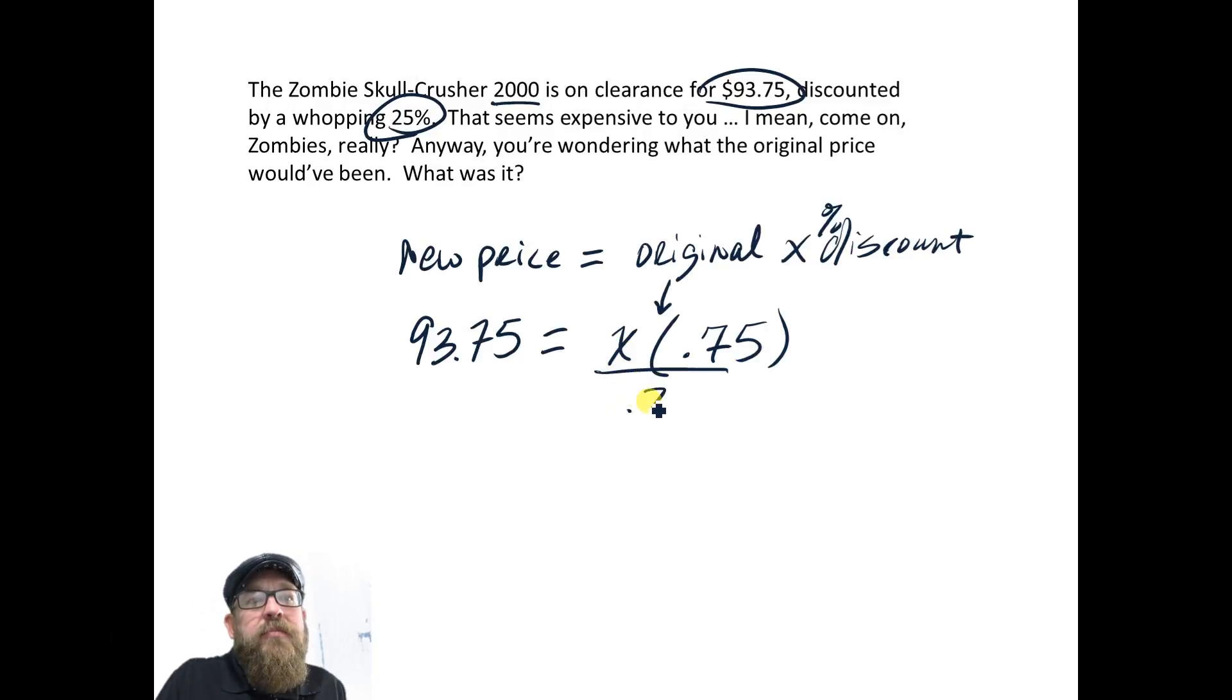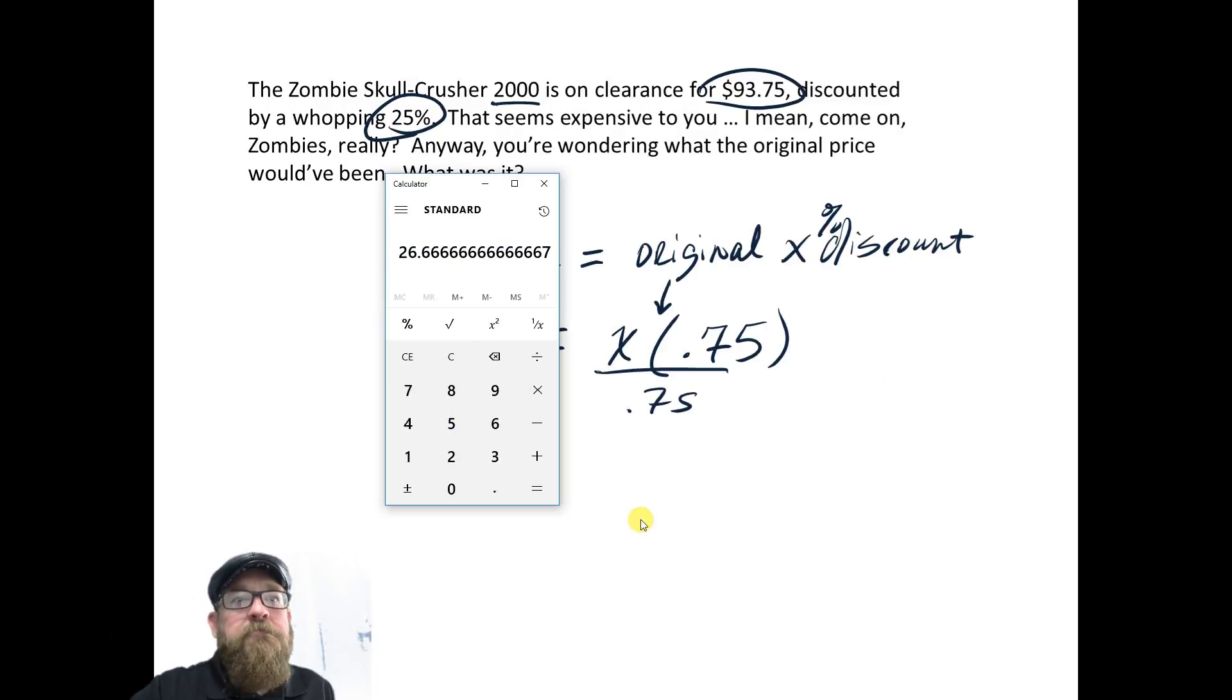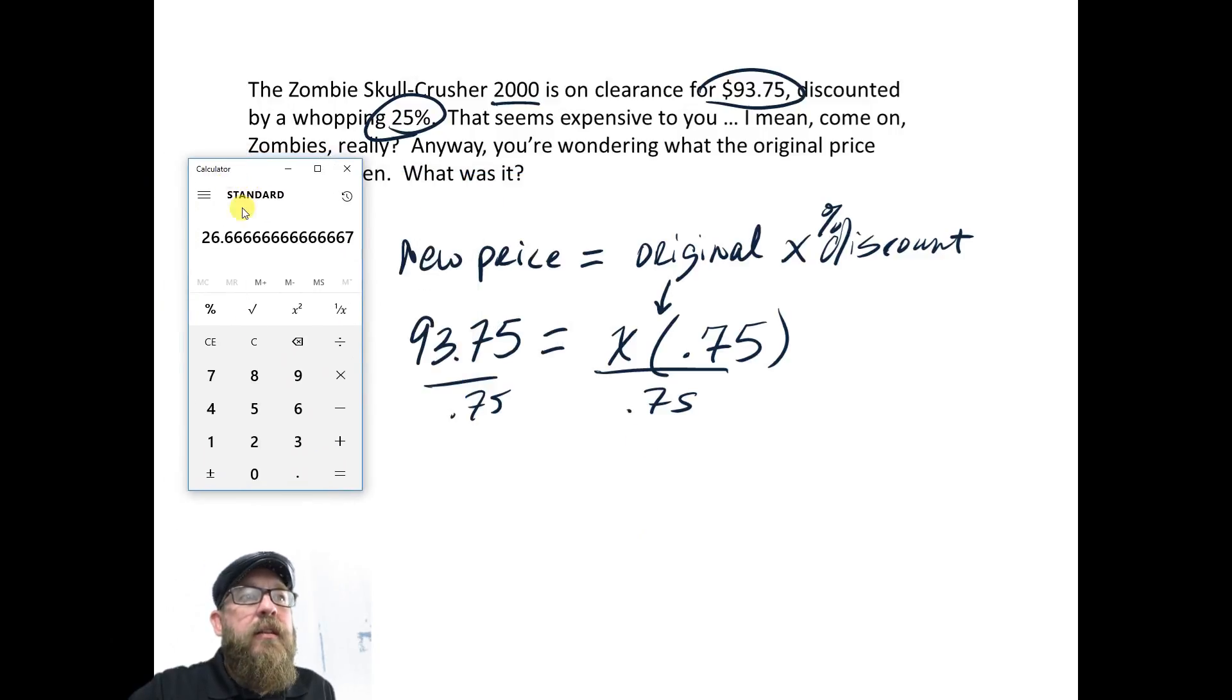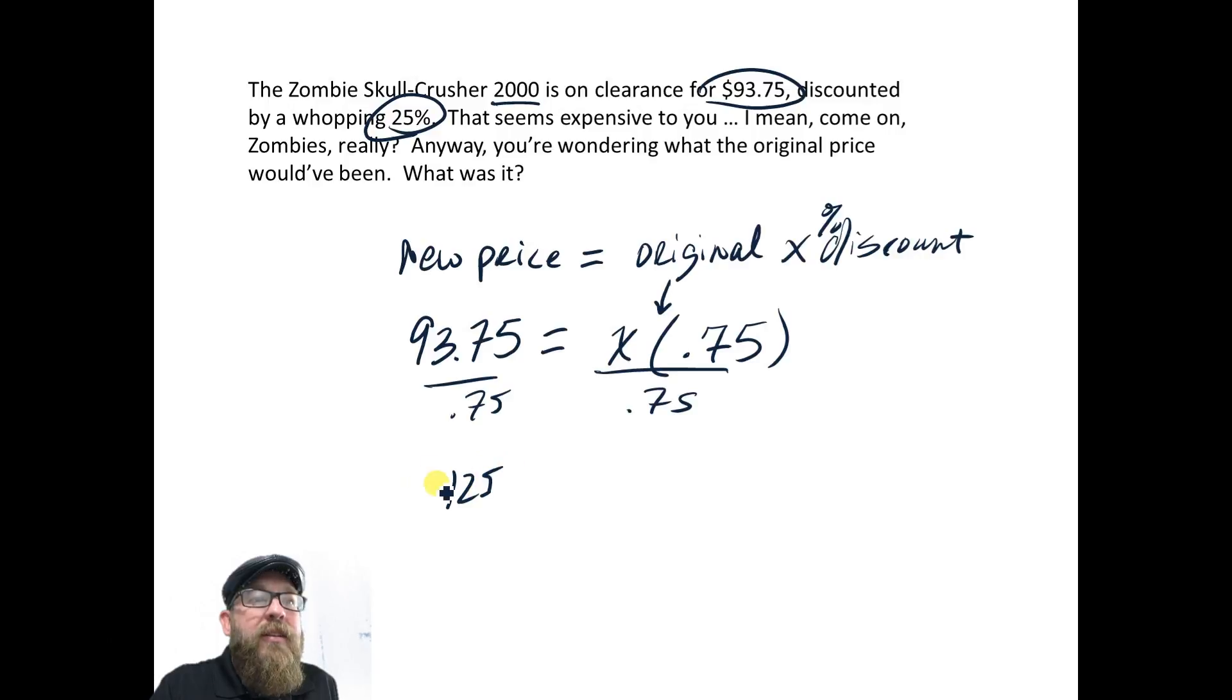So to solve it, all we have to do is divide. Get our calculator ready again. So we've got $93.75 divided by 0.75. Now before I hit equal, since this is on sale, I would expect a price that's higher than $93.75. So let's go ahead and see. Ah, 125. That's such a nice, easy number. It makes me believe that it's probably correct. So the original price was $125.